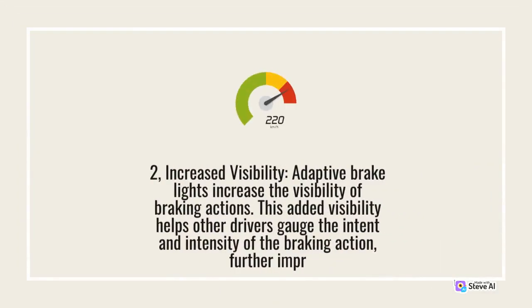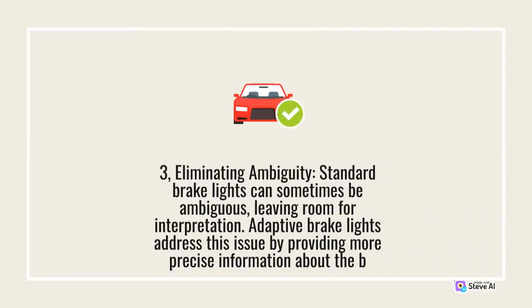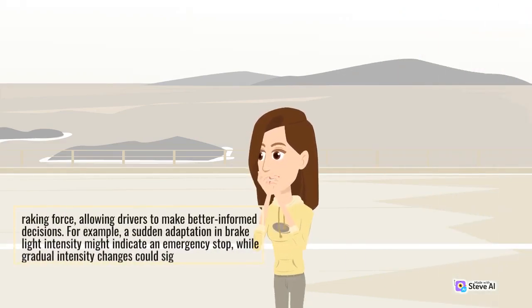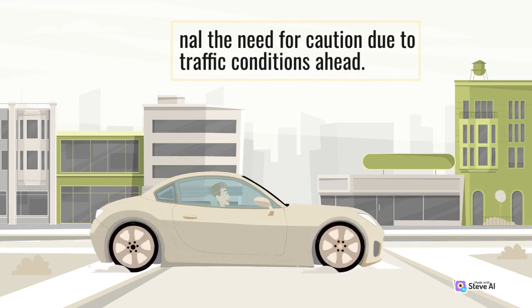2. Increased Visibility: Adaptive brake lights increase the visibility of braking actions. This added visibility helps other drivers gauge the intent and intensity of the braking action, further improving overall road safety. 3. Eliminating Ambiguity: Standard brake lights can sometimes be ambiguous, leaving room for interpretation. Adaptive brake lights address this issue by providing more precise information about the braking force, allowing drivers to make better informed decisions. For example, a sudden adaptation in brake light intensity might indicate an emergency stop, while gradual intensity changes could signal the need for caution due to traffic conditions ahead.